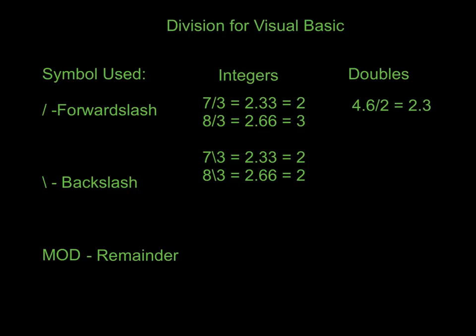And then mod means the remainder. So if we do 7 mod 3, the remainder — this goes back to elementary school, where before you learn decimal places, you put the whole number off to the side. 7 divided by 3 has a remainder of 1. The math behind that: 7 divided by 3 equals 2.33, but that .33 means there's one whole number left over, so it's 2 remainder 1, giving us 1.